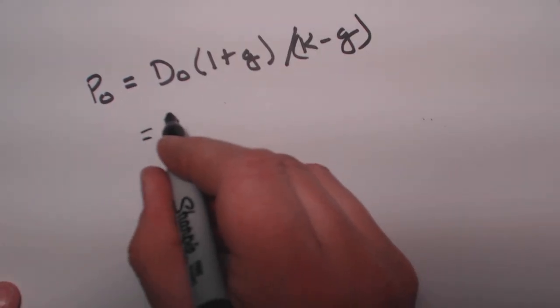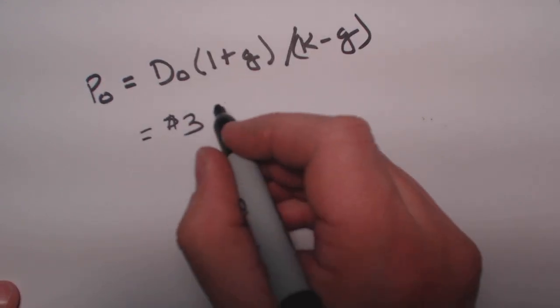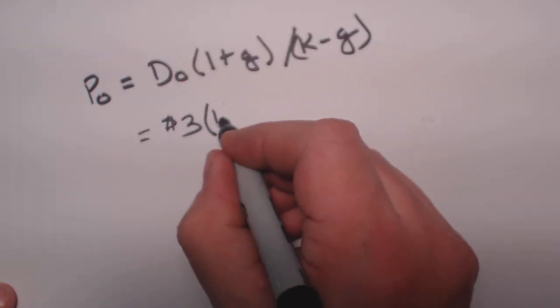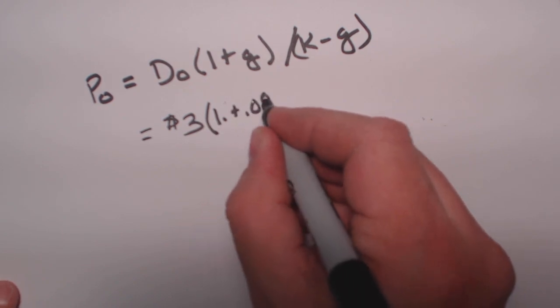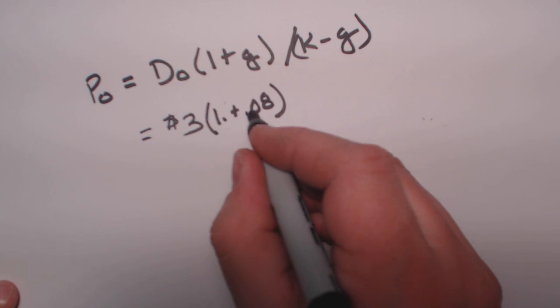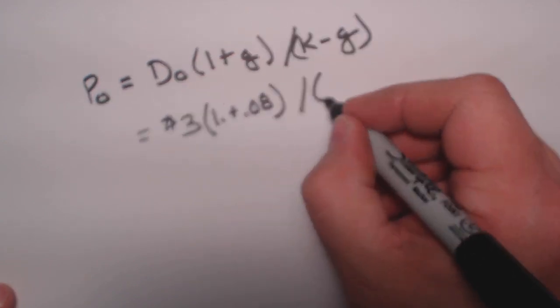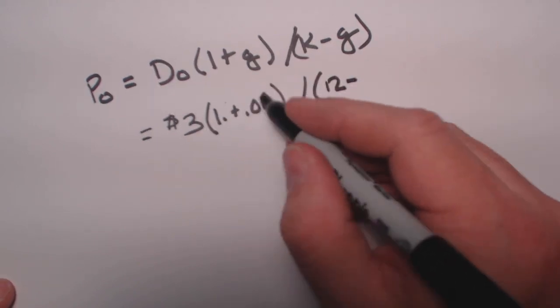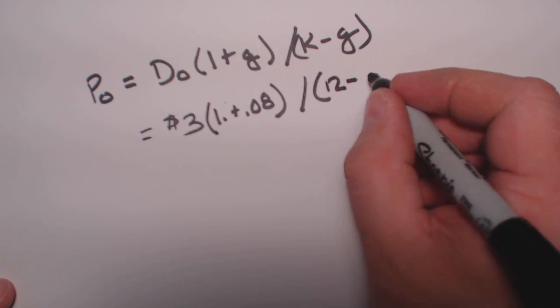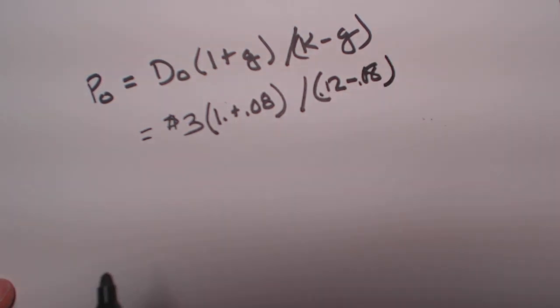So we've had a constant dividend of $3, so D0 is $3. Now we take 1 plus 8%, so 1 plus 0.08, divided by K, which is 12%, minus the growth, which is 8%, 0.08. That's how it's going to look.